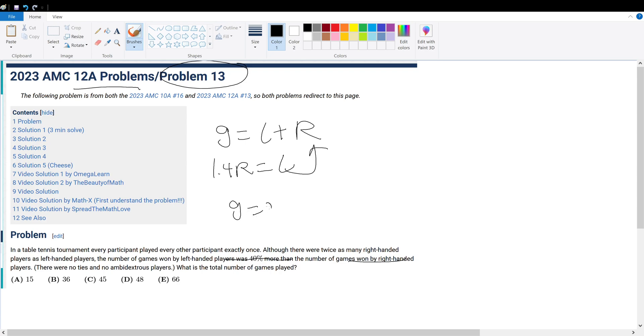If we plug this in, we get G equals 2.4 times R. So the total number of games played divided by 2.4 has to equal the number of games won by right-hand players. And this has to equal a whole number.